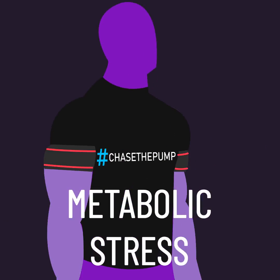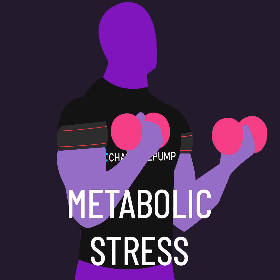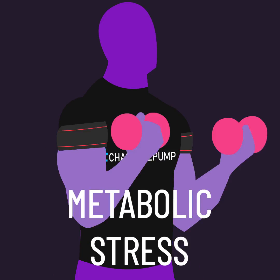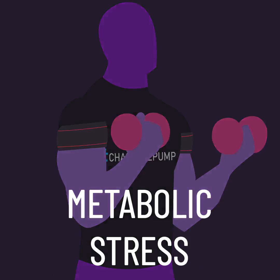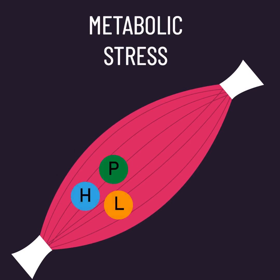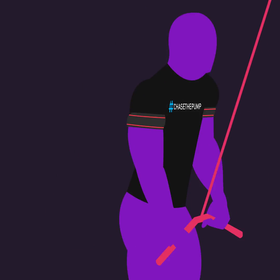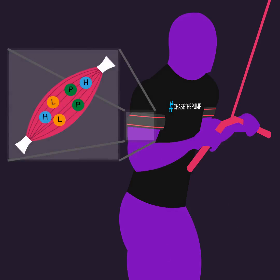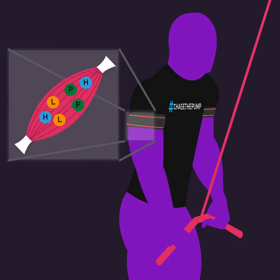Metabolic stress is one mechanism that helps explain why blood flow restriction can be highly effective for muscle development. Metabolic stress is the buildup of metabolites within the muscle. During exercise, the buildup of metabolites can occur due to chemical reactions involved in energy production.